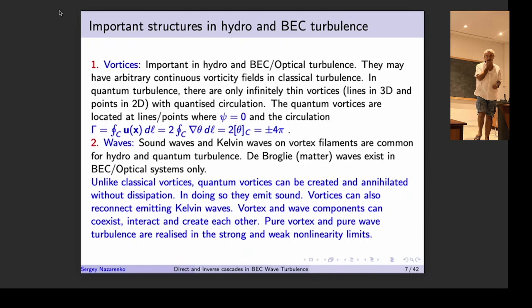There are also waves. In the limit of small nonlinearity, the equation goes to the linear Schrödinger equation, which has wave solutions — the de Broglie matter wave. Those are the waves we concentrate on today. Additionally, there are Bogoliubov sound waves around condensate states, and if vortices are present, they can bend and spiral waves propagating along them — known as Kelvin waves — though we won't consider those today.